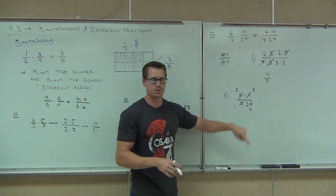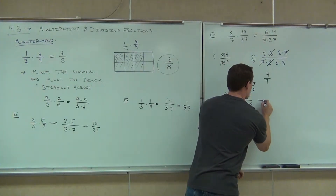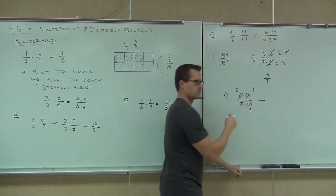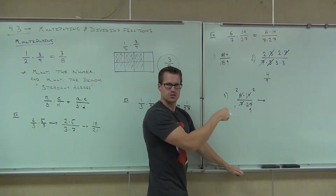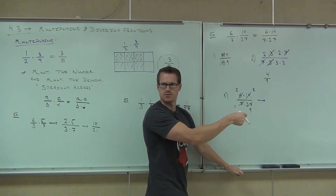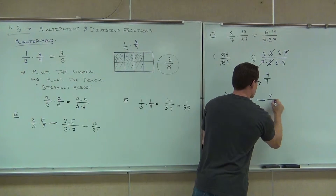It's got to be top and bottom. So if I do the product of what's remaining, I have 2 and 2. What's that give me? 4 over 9.